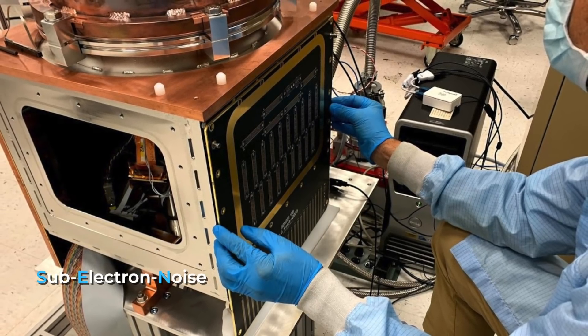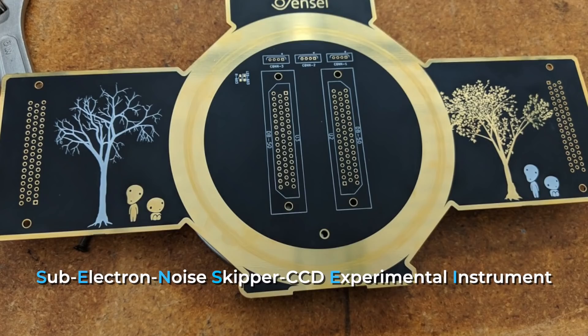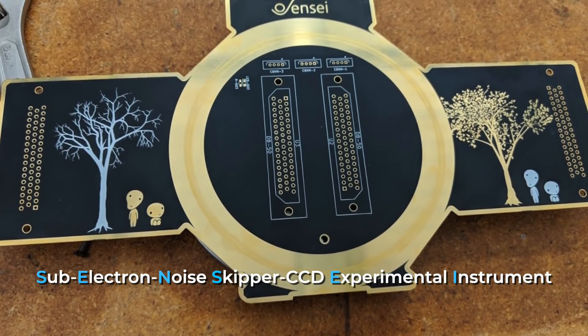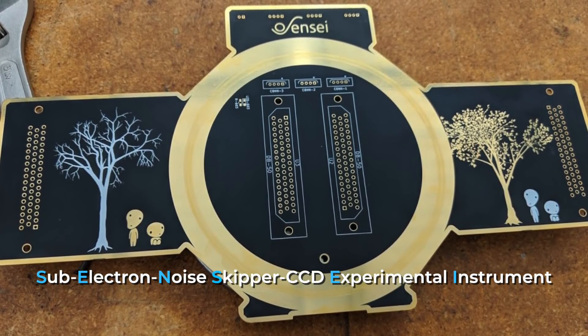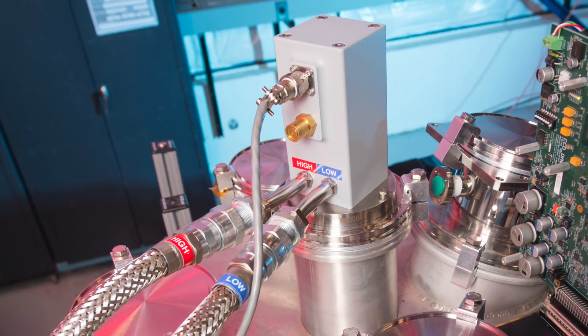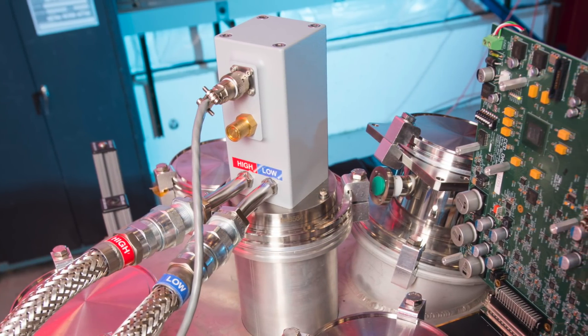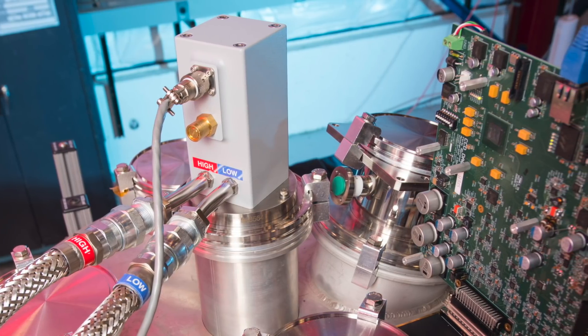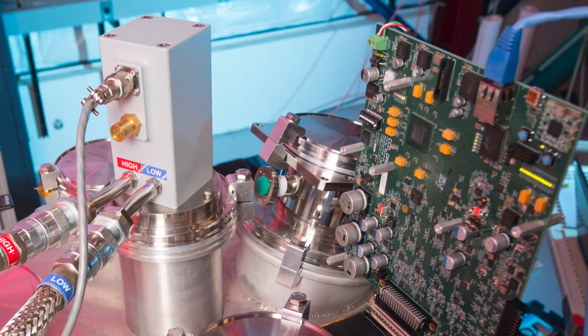Sub-Electron Noise Skipper CCD Experimental Instrument, or Sensei, uses ultra-low noise silicon charge-couple devices to look for dark matter particles with a mass as low as the mass of an electron. That's 500,000 electron volts if dark matter scatters off electrons in the chip. And as little as a single electron volt if the dark matter gets absorbed by the electrons surrounding the silicon atoms.